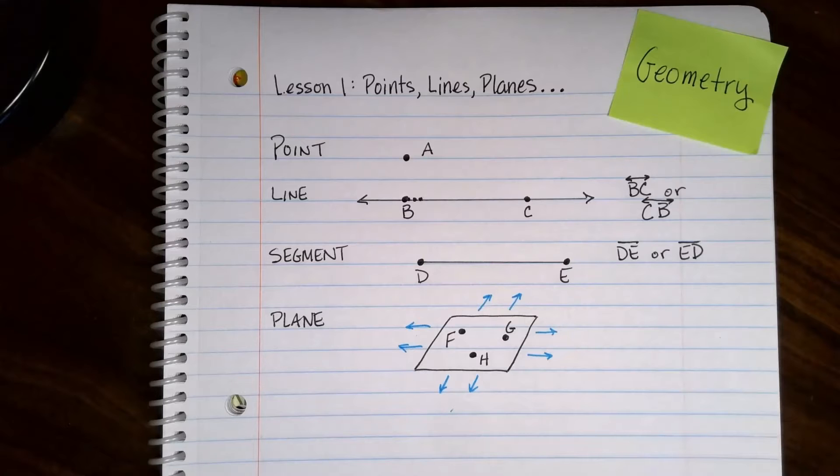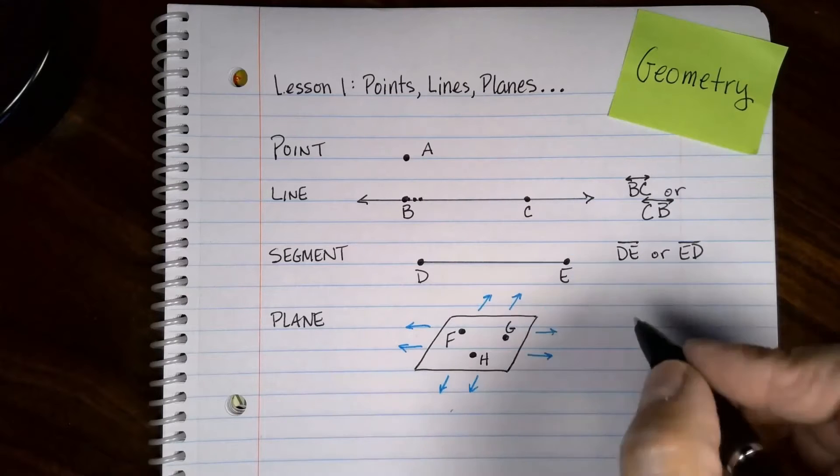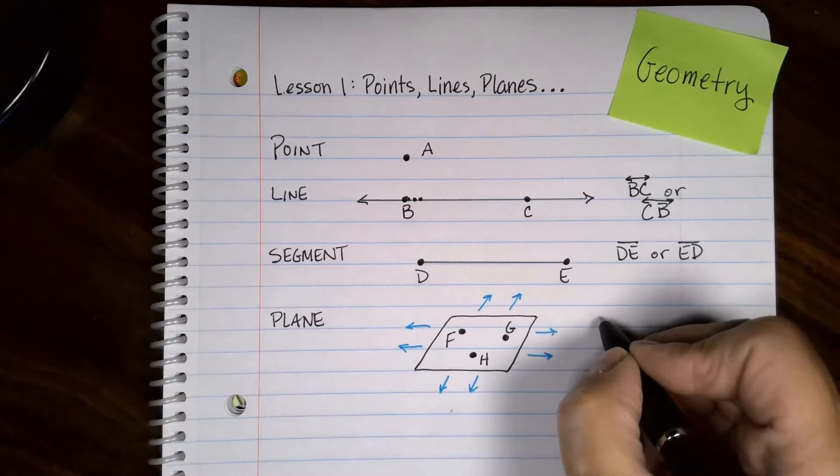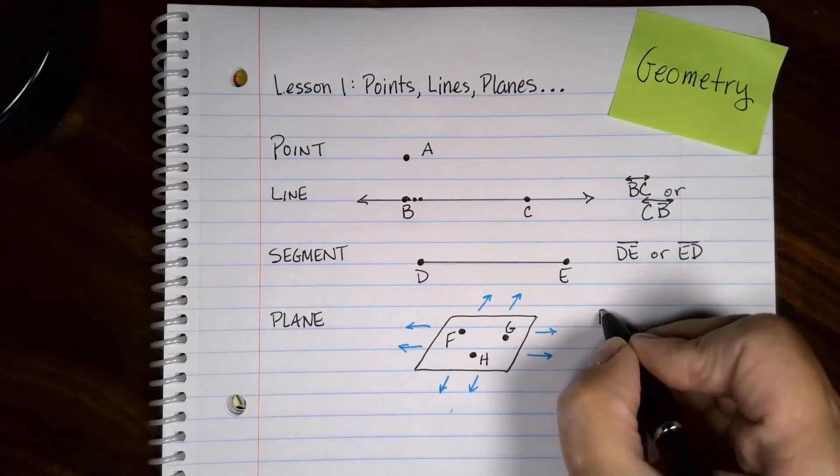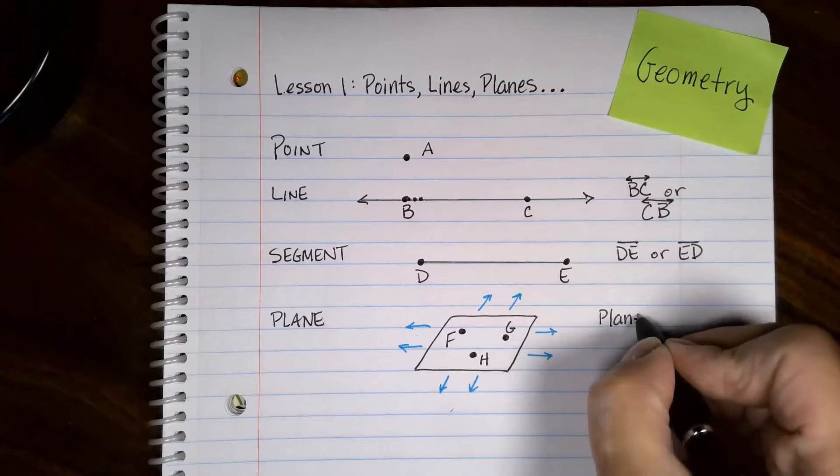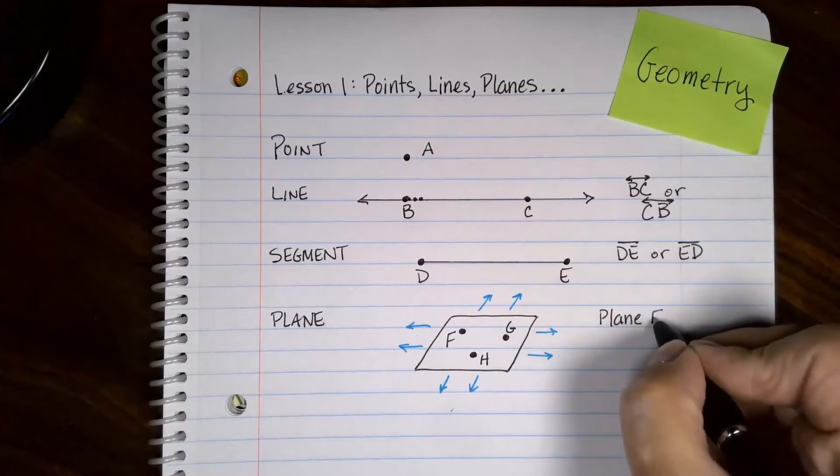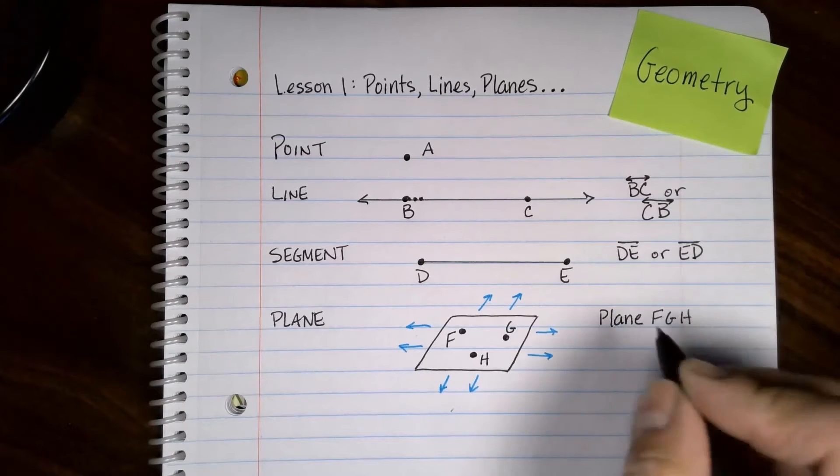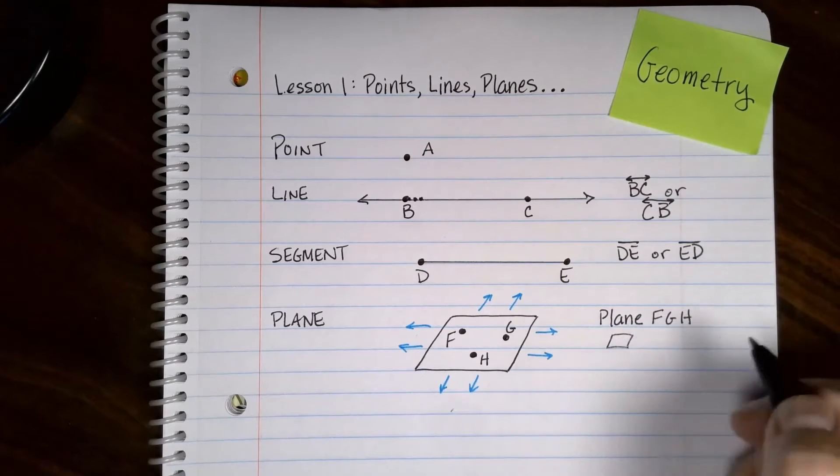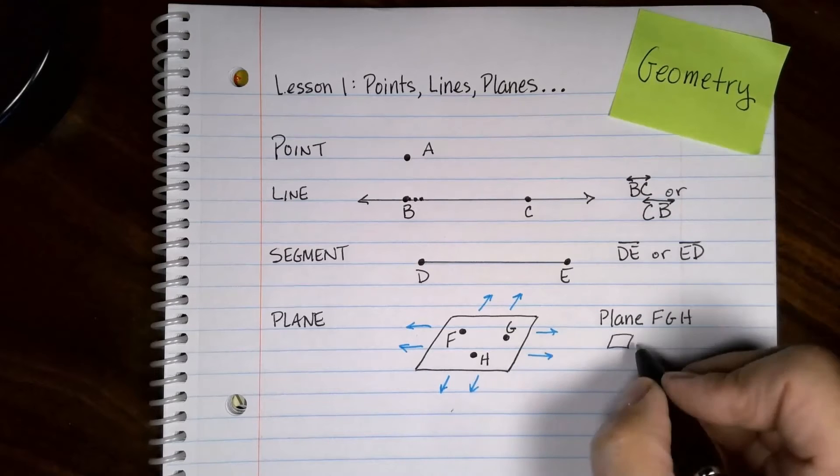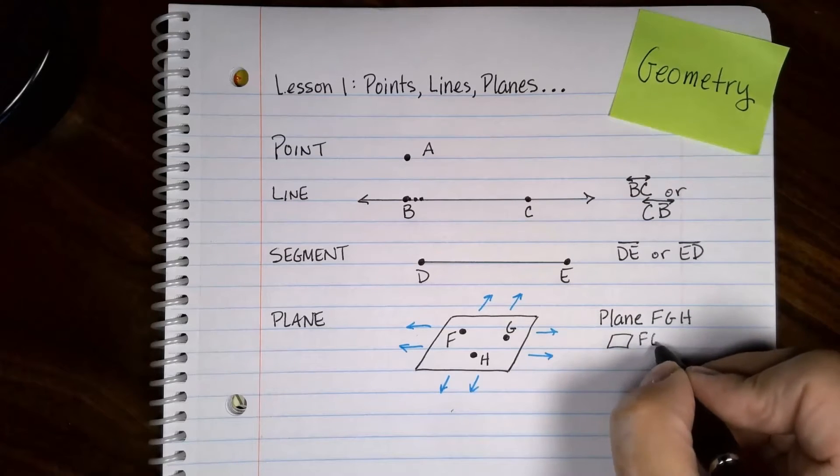To name it, I've seen it written down a couple different ways. You'll have to talk to your teacher about how they're going to do it. Usually in the textbooks I've seen, they just use the word plane F, G, H. But I have seen some where they put this little shape in front of it, like this, and F, G, H.